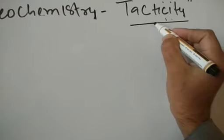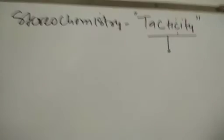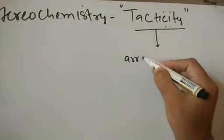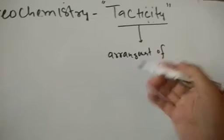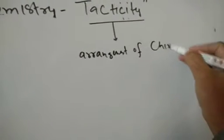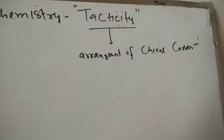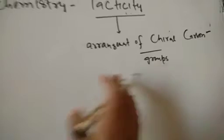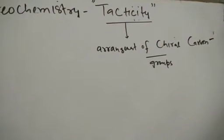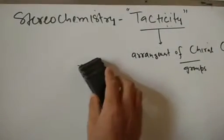This phenomenon is also called as the tacticity of a polymer. Tacticity basically means the arrangement or order of arrangement of chiral carbons in a polymeric chain — how those groups and atoms are arranged in a straight polymeric chain. Based upon that arrangement, there are three main types of polymers.